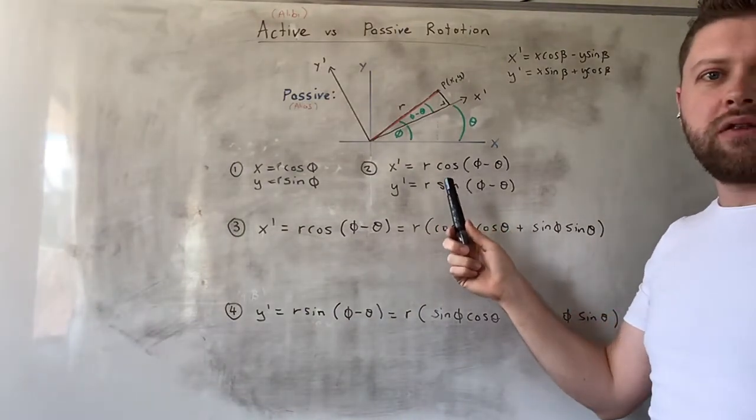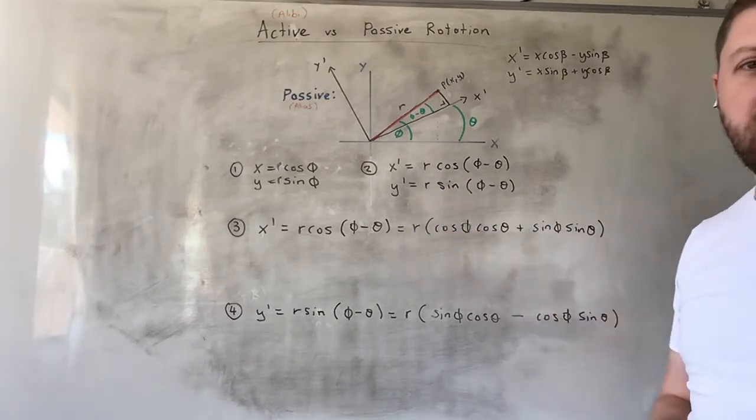And then we can derive similar expressions that we got the last time. So we now have x-dash is r cosine (phi minus theta), and y-dash is r sine (phi minus theta). So we're dealing with the difference of two angles, not the sum of two angles, like we had the last time. And that creates new expressions.